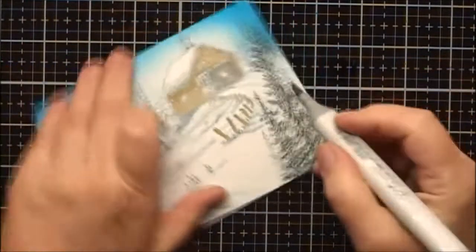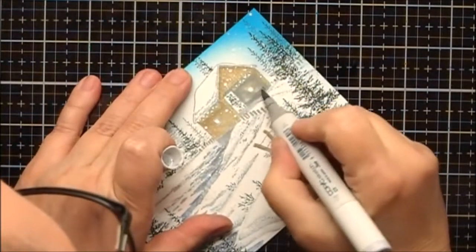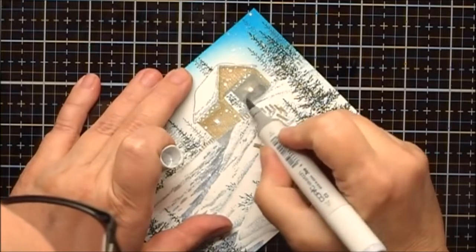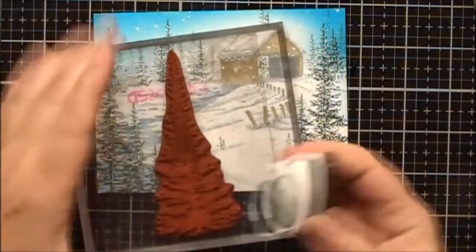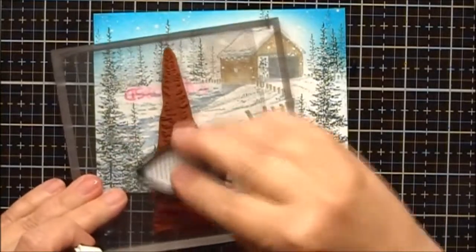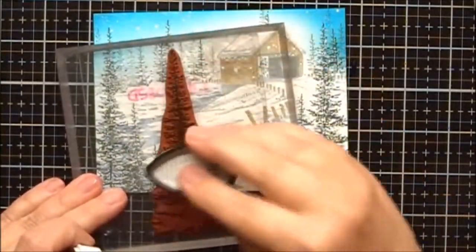Unfortunately the mask removed some of the paper, so I'm going to put some more C3 on here. And to help hide that, I'm going to add another Pine Tree.